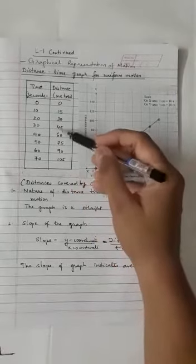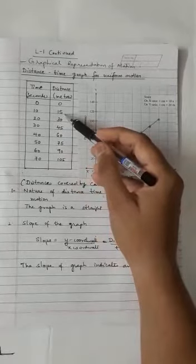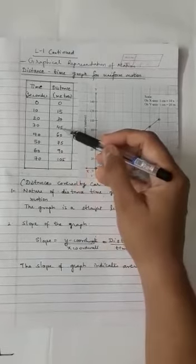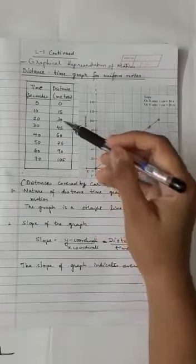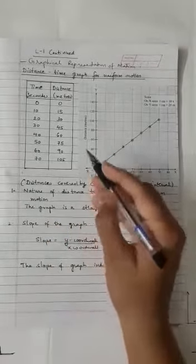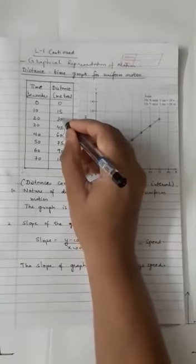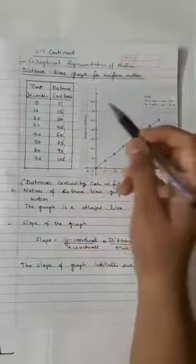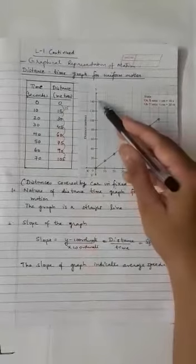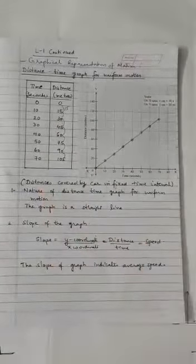Here also you can see it is the table of 15. So when time is 10 seconds, your distance is 15. When time is 20 seconds, distance is 30. When time is 30 seconds, the distance is 45. And when time is 70, the distance is 105. So when you take the difference at every step, we get a difference of 15 units. Distance is given in meters along the y-axis, whereas time is given in seconds along the x-axis.